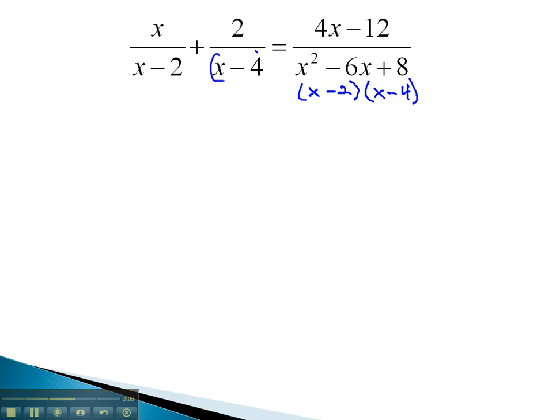And looking at the other denominators, we see that the least common denominator needs only to have in it an x minus 2 and an x minus 4. So we'll multiply by x minus 2, x minus 4, all the way across on each term.